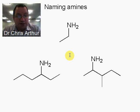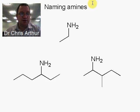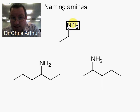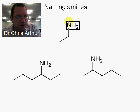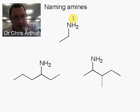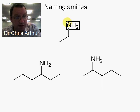We're going to talk about naming amines. There are effectively three different types of amines. You can have a primary amine, where you have a carbon attached to nitrogen and the nitrogen is attached to two hydrogens. You can have a secondary amine, where instead of a hydrogen, it's attached to another carbon or another alkyl group. And you can have a tertiary amine, where there are no hydrogens on the nitrogen and it's attached to two alkyl groups, or two carbon-containing compounds.